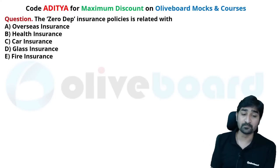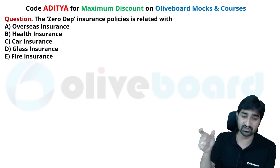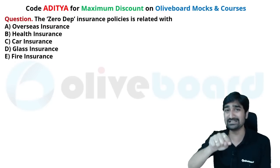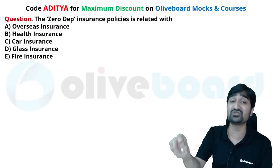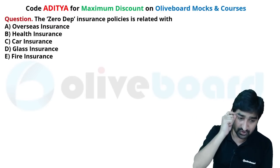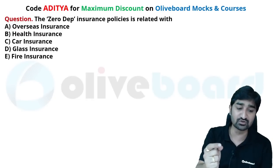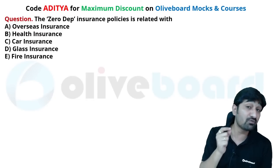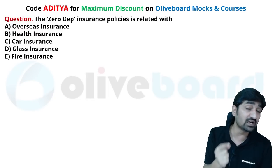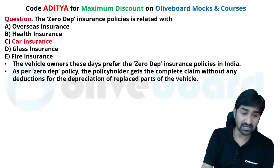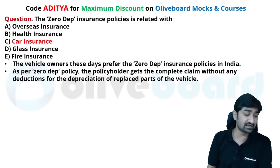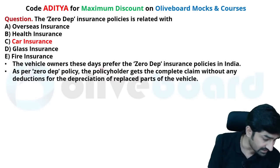Which of the following is a zero depth insurance plan? Zero depth insurance is related to depreciation — and depreciation here is related to car insurance. Zero depth means zero depreciation in car insurance.